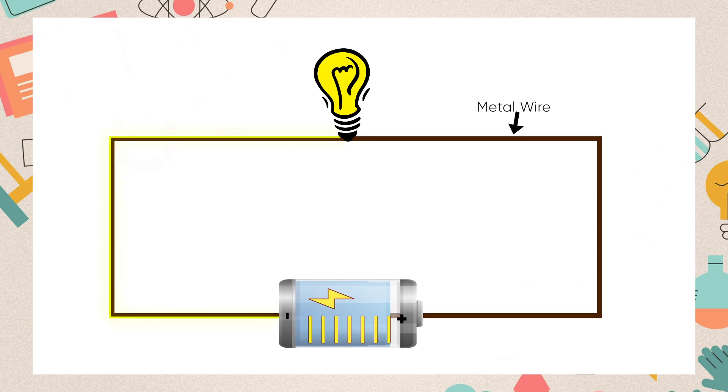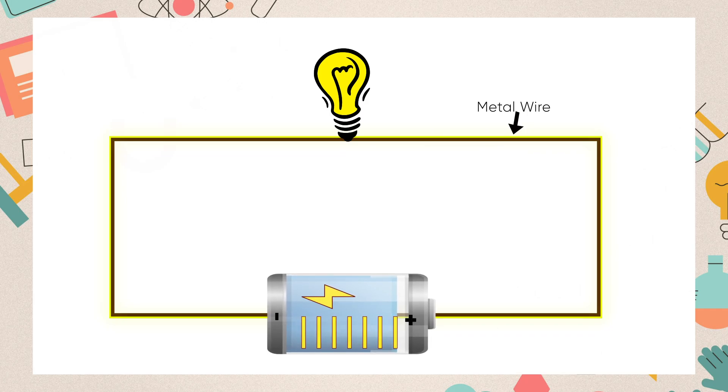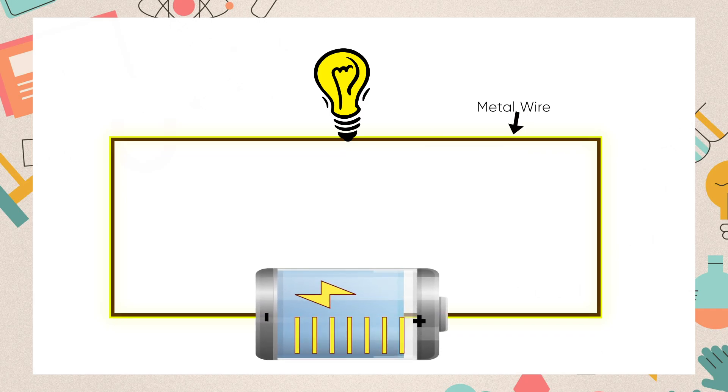To complete the flow of electricity, we use a metal wire or electric wire. Metal is a good conductor of electricity.